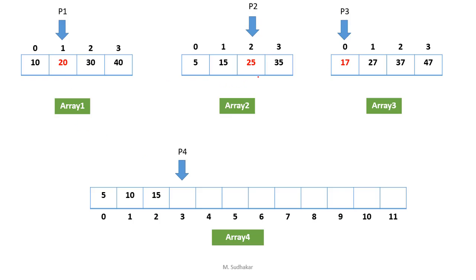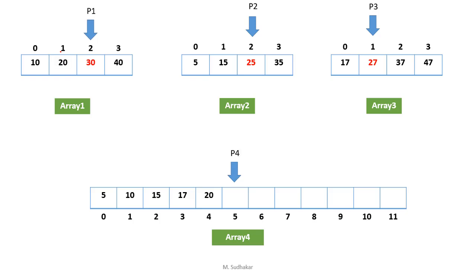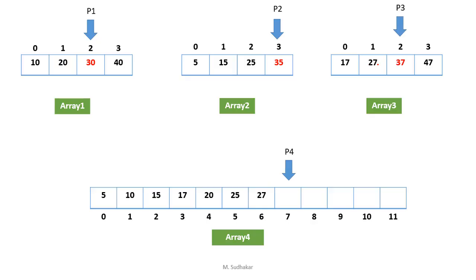Compare 20, 25 and 17 — 17 is minimum. Copy 17 to array 4 from array 3, increment p3 and p4. Then compare 20, 25 and 27 — 20 is minimum. Copy 20 to array 4 from array 1, increment p1 and p4. Compare 30, 25 and 27 — 25 is minimum. Copy 25 to array 4, increment p2 and p4. Compare 30, 35 and 27 — 27 is minimum. Copy 27 into array 4 from array 3, increment p3 and p4.